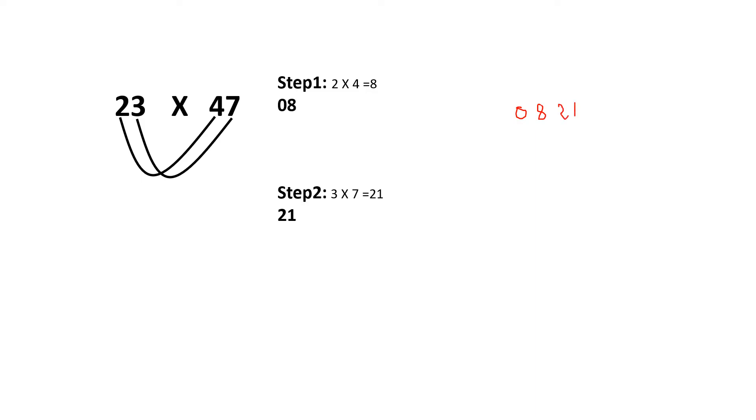Once I am done with that, my third thing is unit digit of the first number and 10s place of the second number is going to be multiplied. That is basically 12. And into that first place, that is 10s place into unit place is multiplied and added. That is 14.